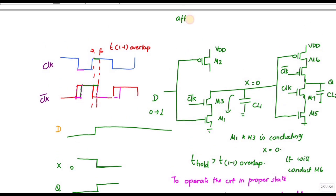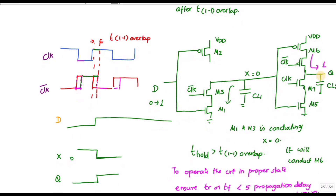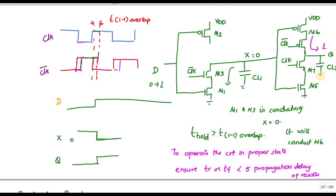After the one-one overlap, the clock-bar value becomes zero and clock is one. Since clock-bar is now zero, it turns on the transistor and the output Q goes to one. This causes a race problem. To avoid this race condition, the constraint is that the hold time must be greater than the one-one overlap time.